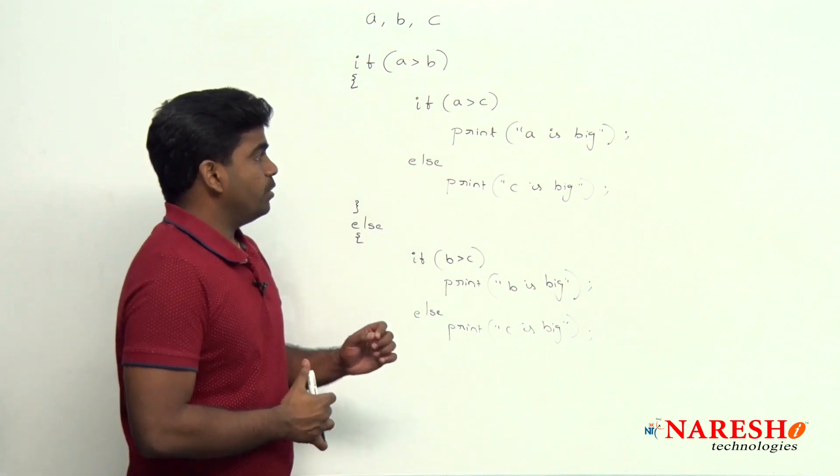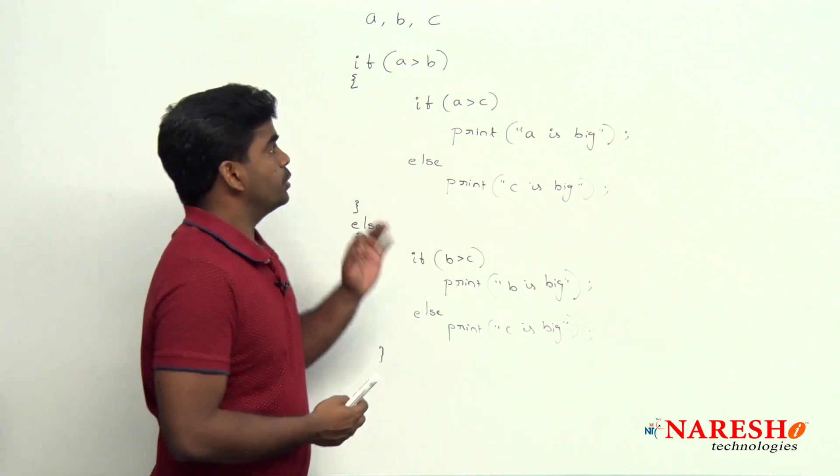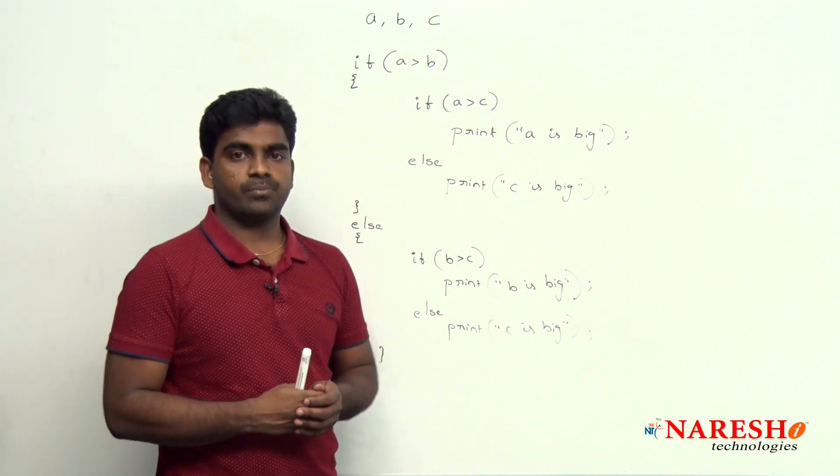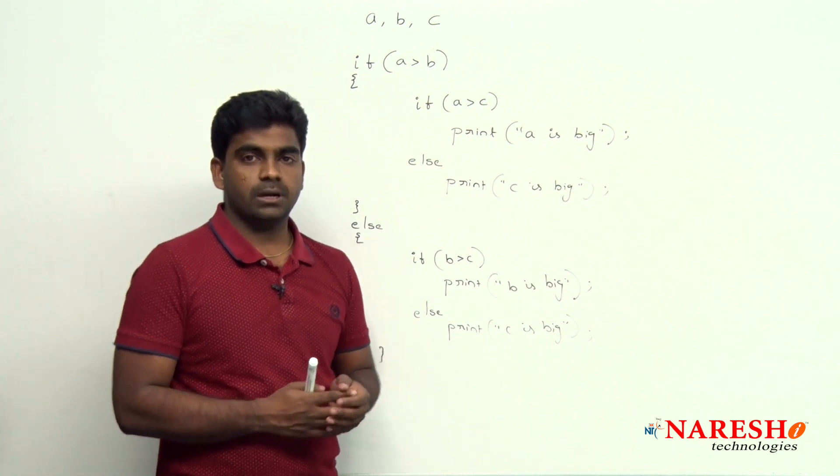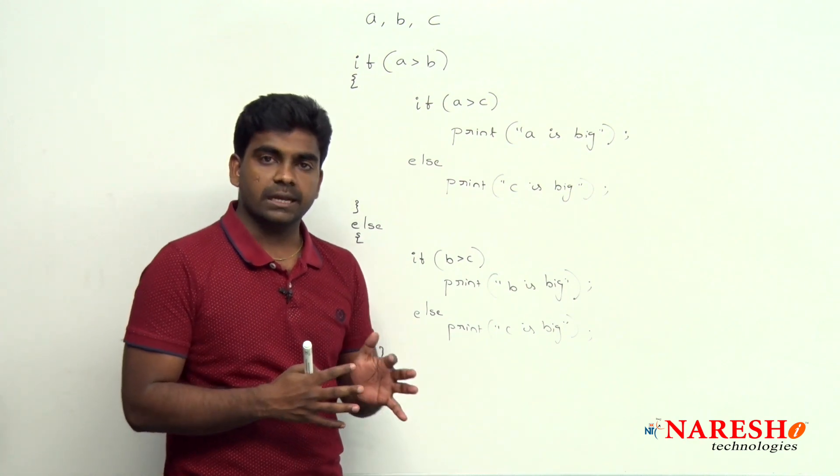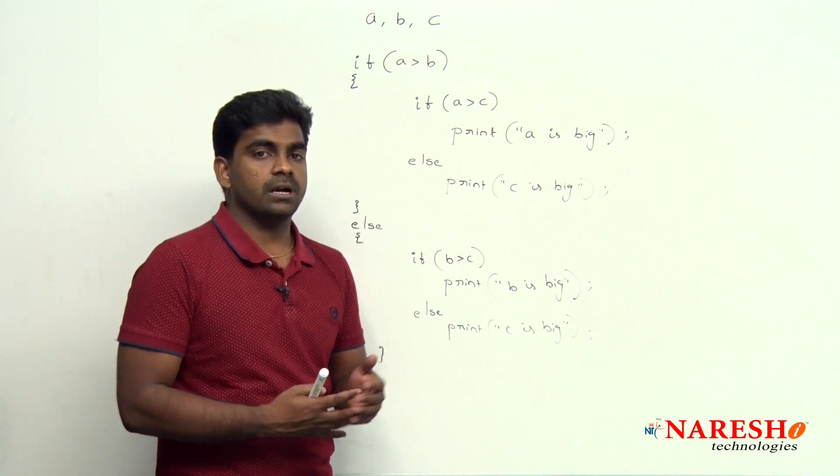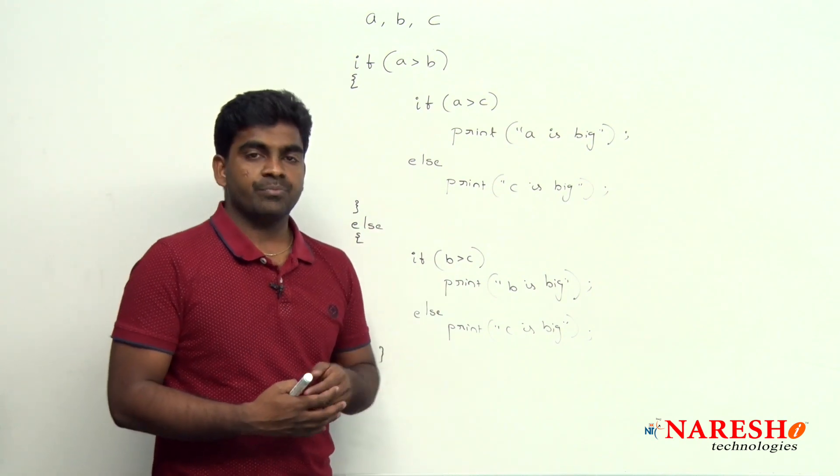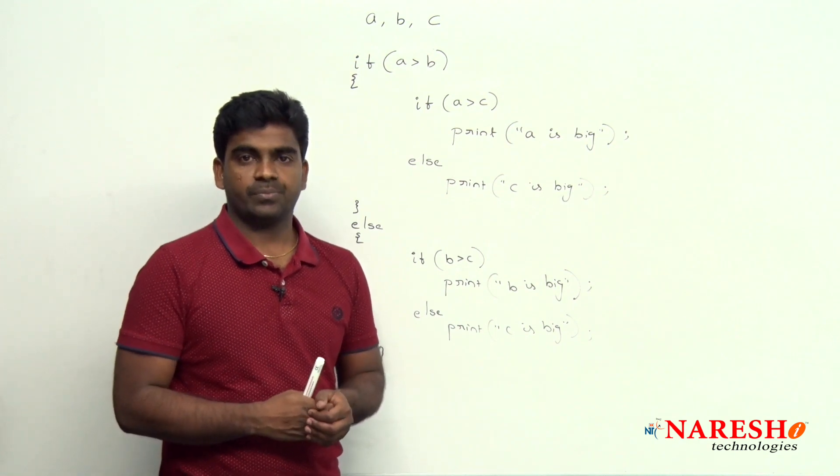So this is the way of writing code to find biggest of three numbers using nested if. Logical program implementation means different programmers will think in different ways, and different programmers will use different types of blocks and different types of operators to implement their logic.